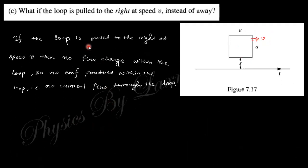Next: what if the loop is pulled to the right (parallel to the wire) with velocity V? In that case there is no flux change because dS/dt = 0, meaning no change in flux. Since there is no flux change, there is no induced EMF and no current flows within the loop.